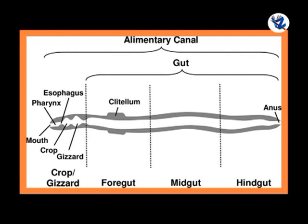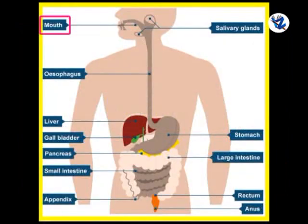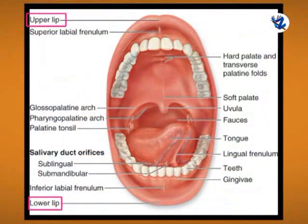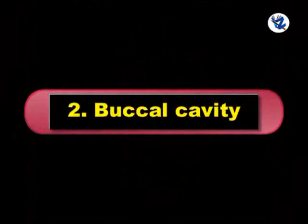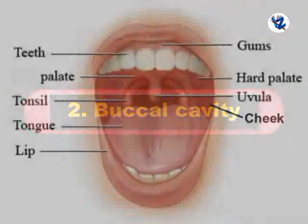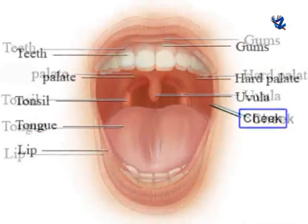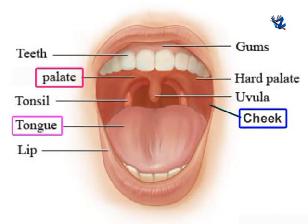The different parts of the alimentary canal are: 1. Mouth — it is the uppermost opening of the alimentary canal, bounded by upper and lower lips, and leads to the buccal cavity, concerned with the ingestion of food. Then buccal cavity — it is the space formed by cheek, palate and tongue. Teeth and salivary glands are present here.